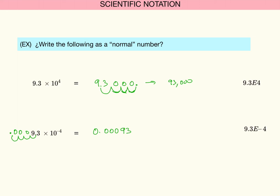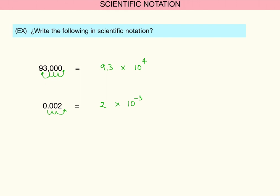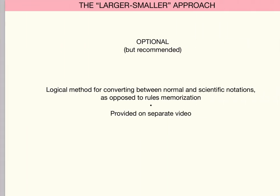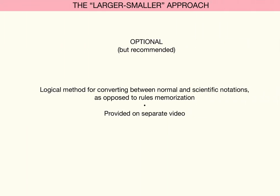You have to remember the rules of which way to move the decimal point — to the right or left — depending on whether you're converting scientific notation to a normal number or a normal number to scientific notation. If you have trouble remembering the rules, there is a logical mathematical method called the larger-smaller approach, covered in a separate video, that you can use to figure out which way to move the decimal point. Otherwise, memorize the rules and you'll do fine.